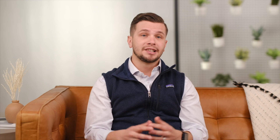Forfeiture means you can lose options if you do certain things. Here's how stock options work in practice: WeWash decides to hire Carol, and since they don't have much capital, they give her 100,000 shares of stock options drawn from their authorized shares, with a strike price of $0.10. Four years later, WeWash is exploding and the stock value is $1 a share, making the stock worth $100,000. But Carol only has to pay $10,000 — the strike price — to receive that stock. That's a great deal, especially when options are issued early when stock value is low.